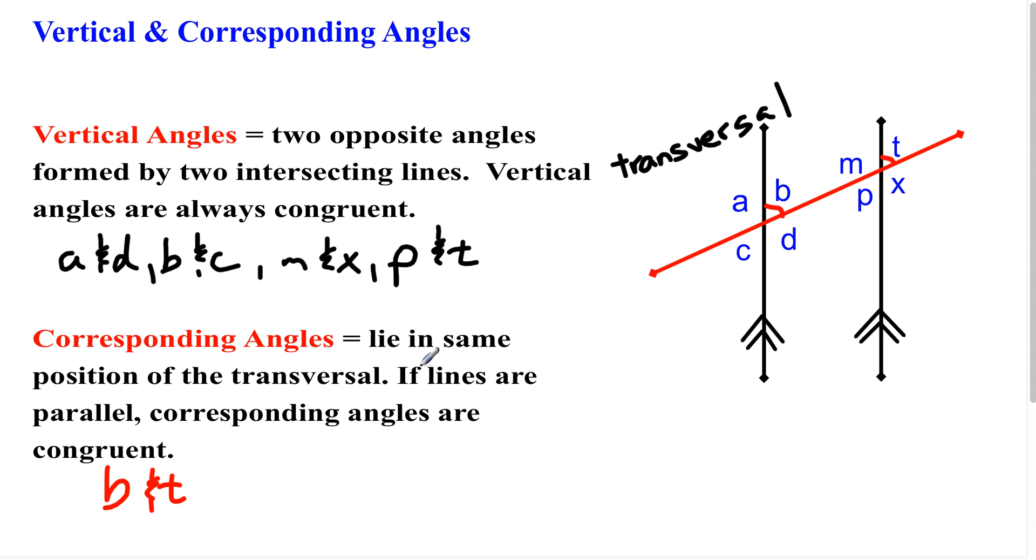And as it says down here, if these lines are parallel, and they are, it says so right down here, corresponding angles are congruent. So they would be exactly the same measure. So for instance, if angle B was 50 degrees, angle T would have to be 50 degrees as well because we have parallel lines here.